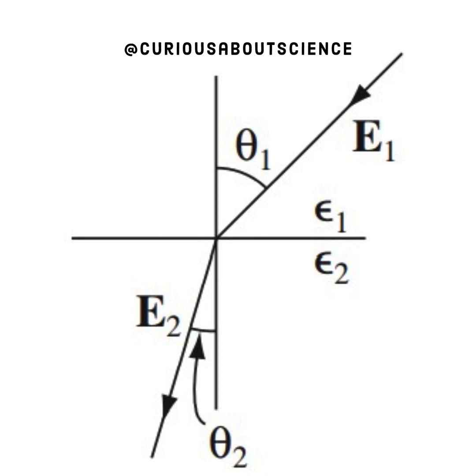And then, on the back side of the plane, we have E2 at an angle emergent of theta 2 of permittivity epsilon 2.